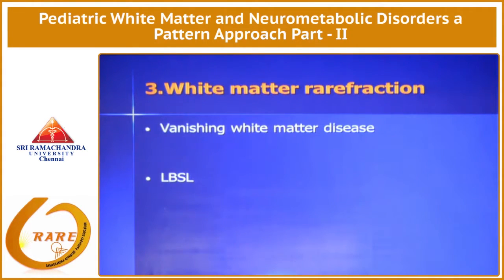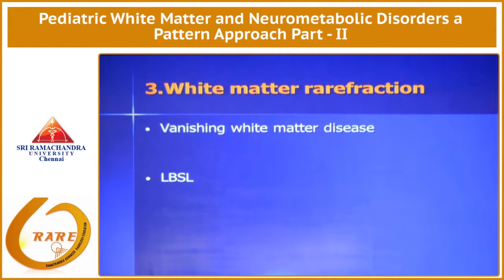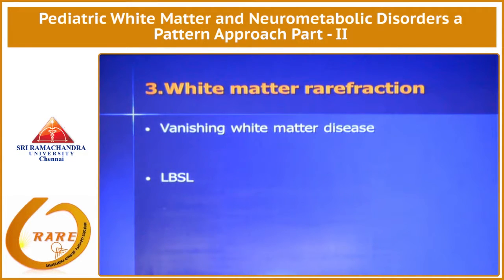White matter rarefaction is where the white matter becomes very hypointense. You get bright white matter on T2, but on FLAIR it becomes very hypointense — it's rarefying, it's liquefying. This is very characteristic of vanishing white matter, because as the name implies it sort of vanishes away.